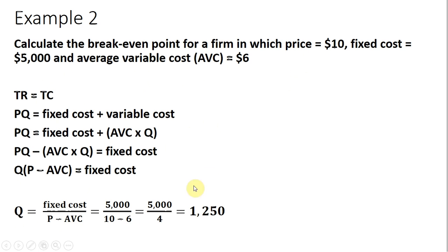We can make our substitutions now: 5,000 divided by 10 minus 6. We see our break-even output is at 1,250 units.